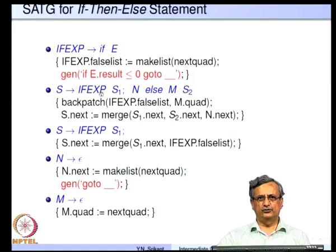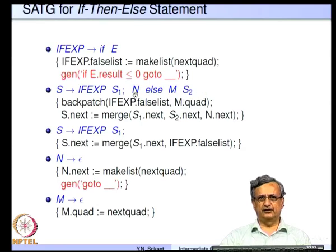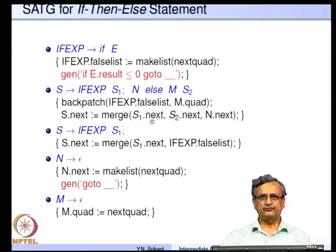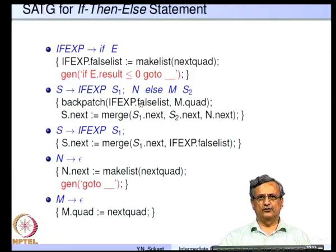During reduction by this production, the if-x dot false list is patched to M dot quad — thereby, if the result is false, we jump to the else part. If the result is true we fall through and execute S1. S dot next contains all possible jumps out of S1. Any jumps within S1 go to the end of S2; N dot next must also go to this point, and any other jumps out of S2 also go to this point. We merge all three lists and put them on S dot next. This is how we generate code for if-then-else.